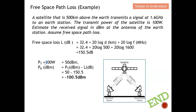The question asks to estimate the received signal power in dBm at the Earth station antenna. First, convert the transmit power: 10 log(100 W / 1 mW) = 50 dBm. Then, receiver power = transmit power (dBm) minus free space path loss = 50 dBm minus 150.5 dB = minus 100.5 dBm. This is the received signal strength at the Earth station antenna under free space conditions.